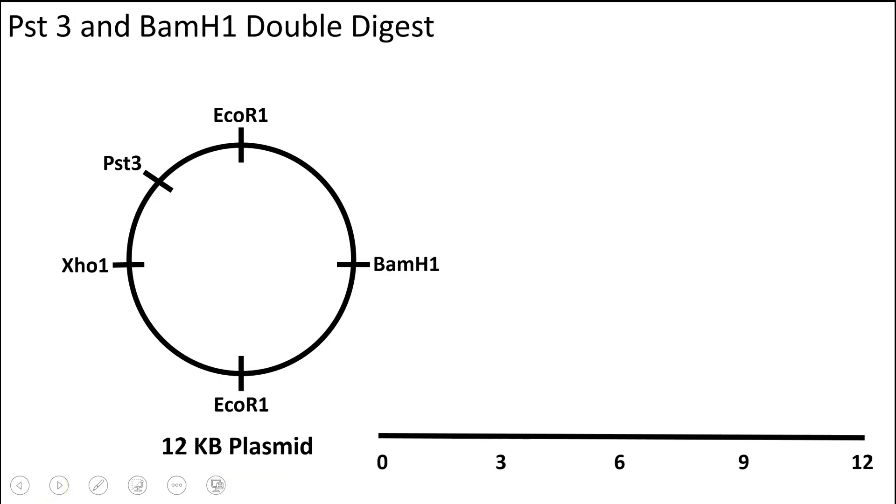Let's go to a more complicated example. Here we're going to do a double digest using the restriction enzymes Pst3 and BamH1 in this double digest. You can see Pst3 here and you can see BamH1 here. My approach to figure out these fragments is because we're dealing with a 12 KB fragment and you have four quadrants, each quadrant here is going to be worth 3 KB. And so because this Pst3 site is essentially cutting this 3 KB quadrant in half, you're going to get a 1.5 KB fragment here and 1.5 KB fragment here. But you have to consider the other restriction enzyme sites that you're considering. So basically we're going to digest with Pst3 and BamH1, so that's going to be one fragment. If you consider that, it's 3 plus 1.5 for a 4.5 KB fragment.